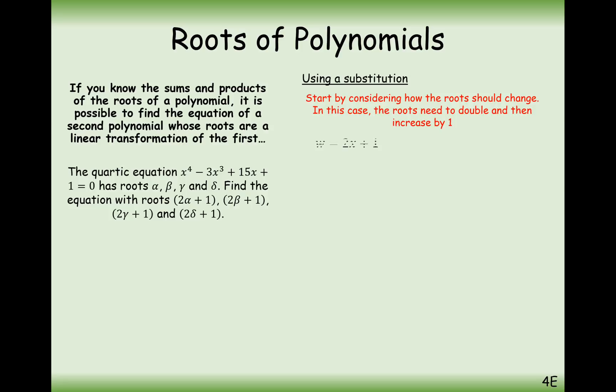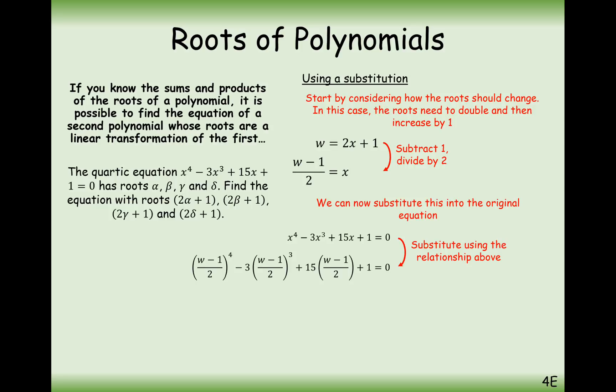So what do we need to do? Well, we first need to find the transformation. w equals 2x plus 1. Rearrange to make x the subject. We're going to take one away first and then half. So w minus 1 over 2 is equal to x. And now we substitute this into the original equation, into that quartic equation we had earlier. So it's w minus 1 over 2 to the power of 4 minus 3 times w minus 1 over 2 cubed plus 15w minus 1 over 2 plus 1 equals 0.